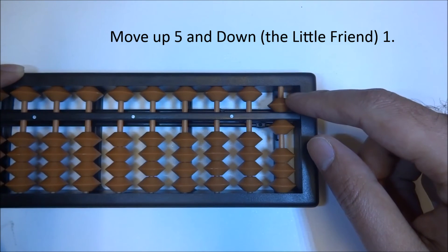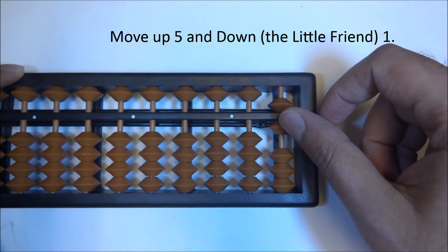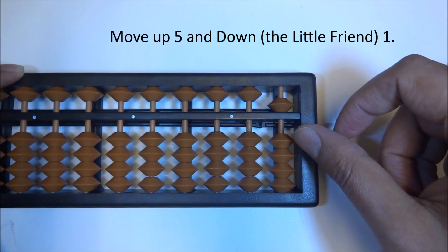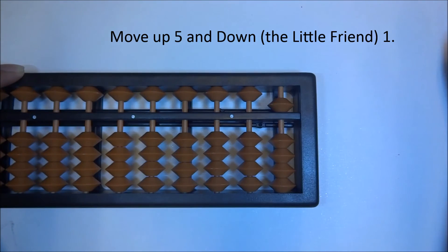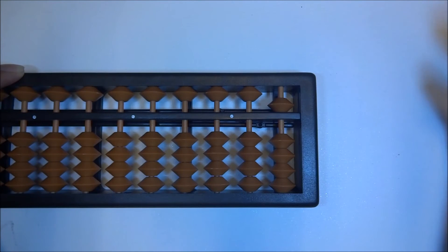So our base being 5, up 5, down 1, the little friend of 4 is 1. So here we have it. 1 plus 4 is 5.